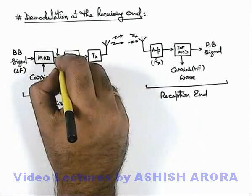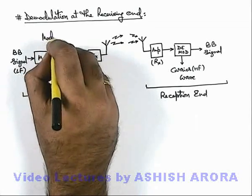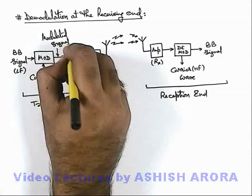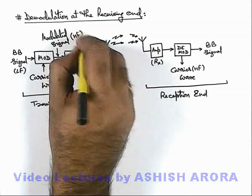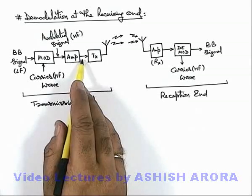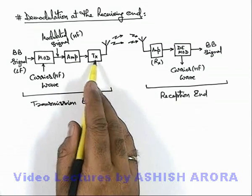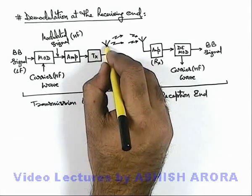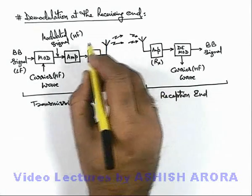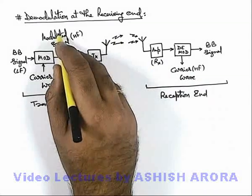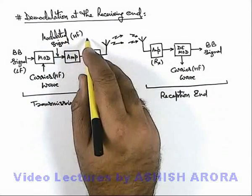And the output of modulator is the modulated signal, which is obviously a high frequency signal which is first amplified to increase its power and from the transmitter it is transmitted into space. Here the size of antenna will be small because the actual wave which is being transmitted is the modulated wave and that is a high frequency wave.